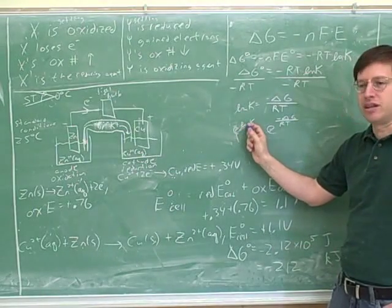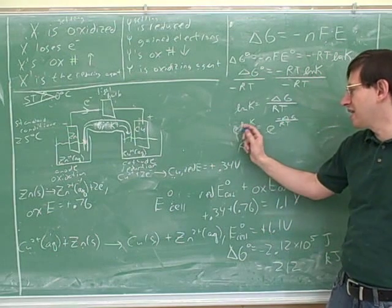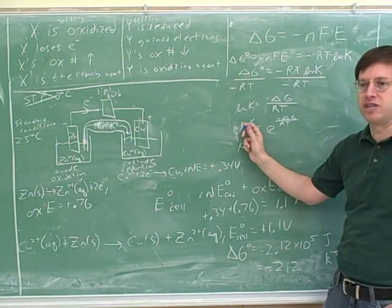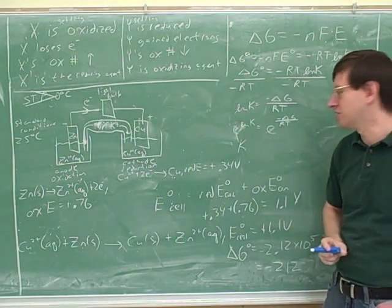All right, and what is e to the ln k? So that's just k. The whole point here is that e and the natural log are inverse functions of each other. They cancel each other out. That's the reason this was a good idea. So these are inverse functions, and they cancel each other out.